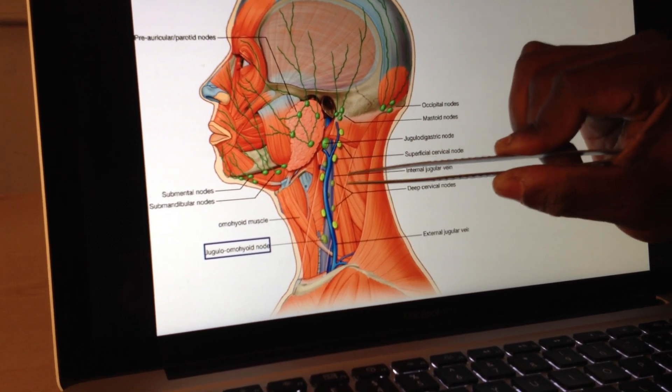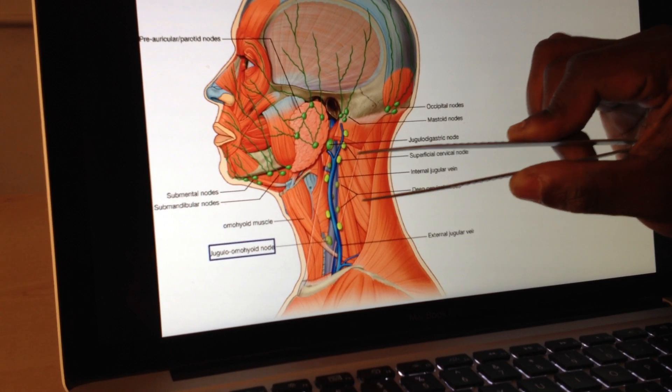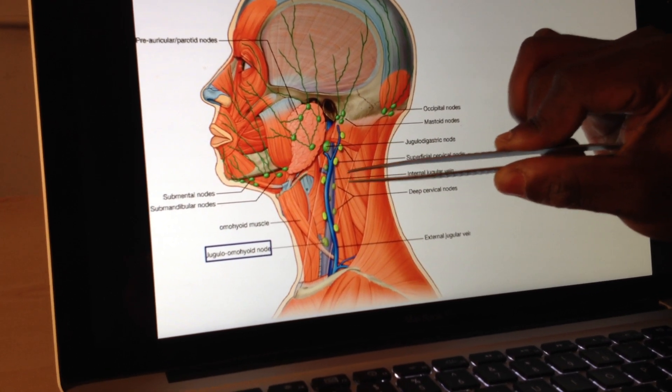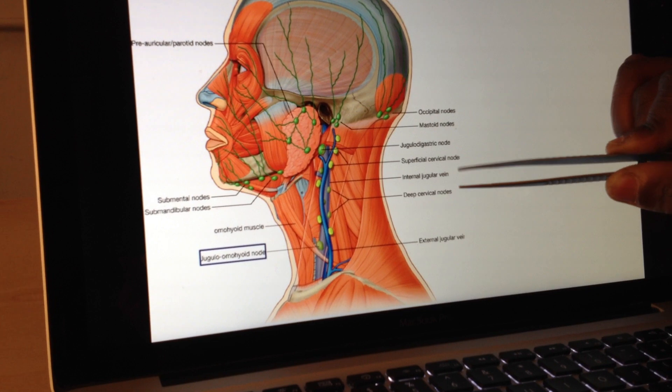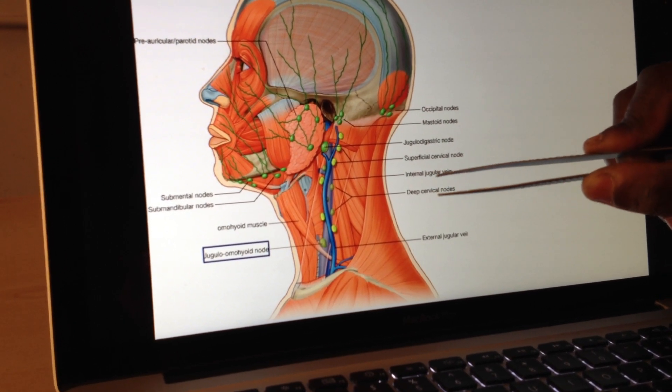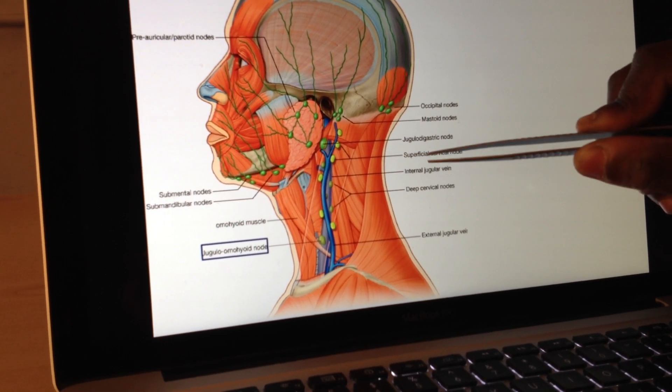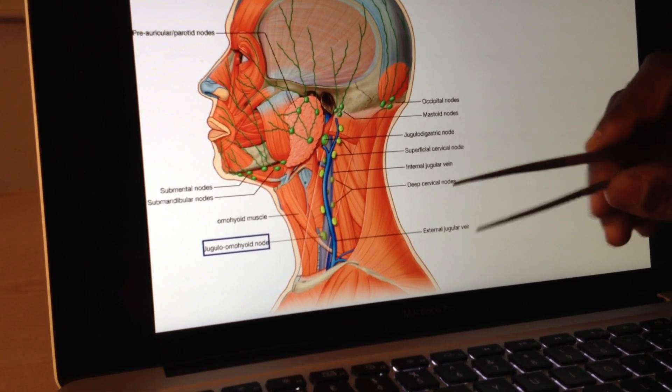If we drop down even further, we're following the line of the internal jugular. Remember, the nodes are following this jugular system, the internal jugular vein. And then we go deeper, deep cervical nodes, following again the neck. So superficial at the top, deeper down at the bottom.